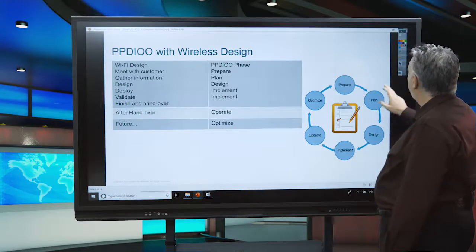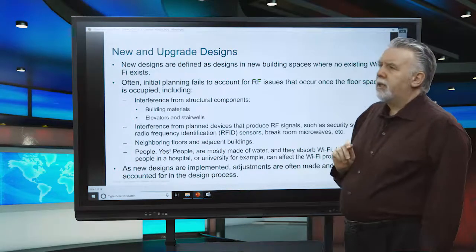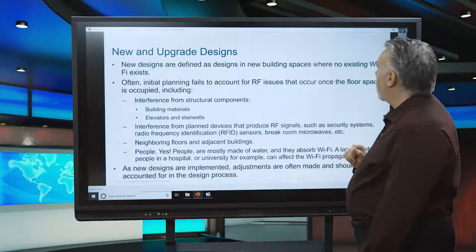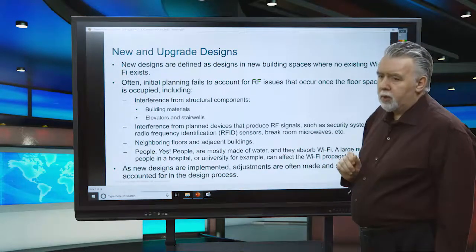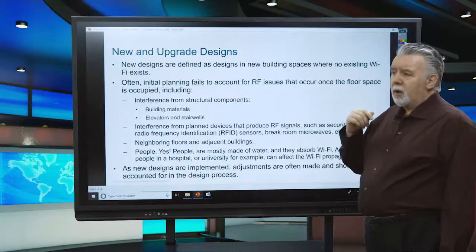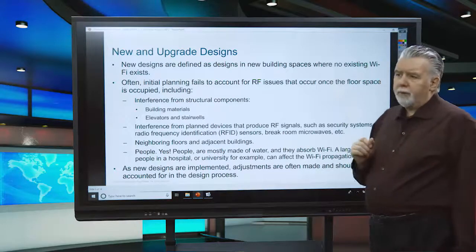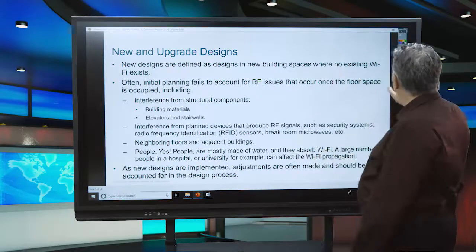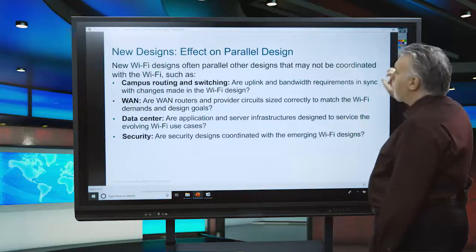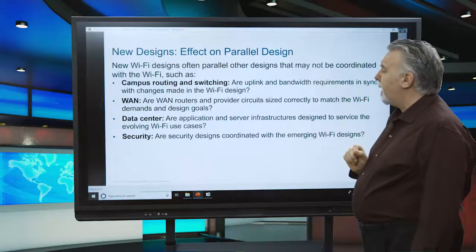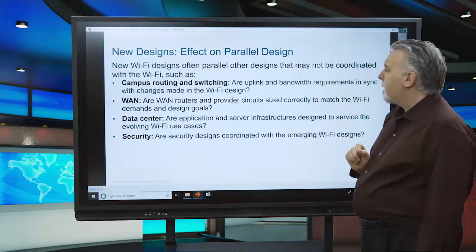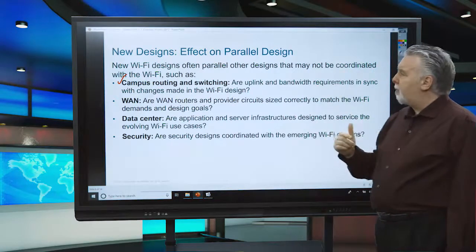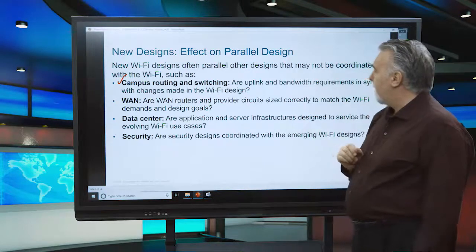Before we start, we need to think about the different types of wireless installations. It may be a new design or it may be an upgraded design. If it's a new design, you have a blank piece of paper and can start from scratch. If it's an upgrade design, you need to find out the current situation. You may also be asked to do a Wi-Fi design in parallel with campus routing and switching as a building is being built or upgraded, so you don't want to discover you need new faster switches after the fact.